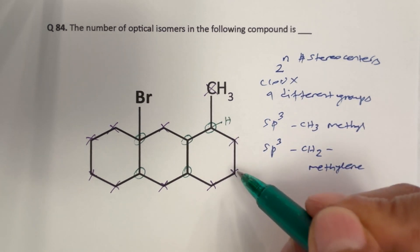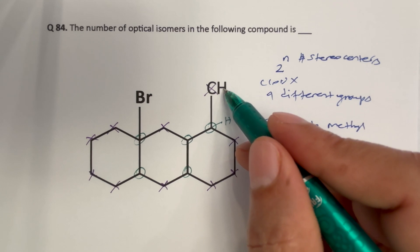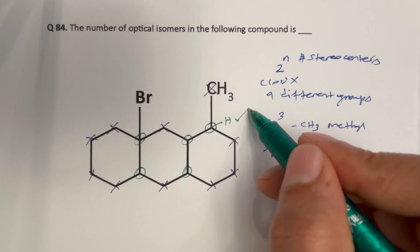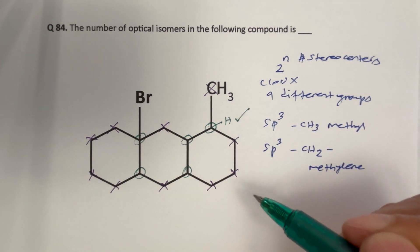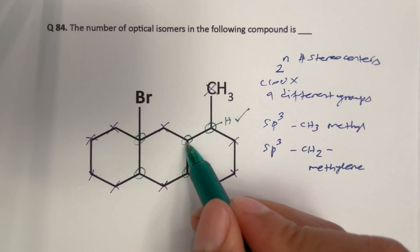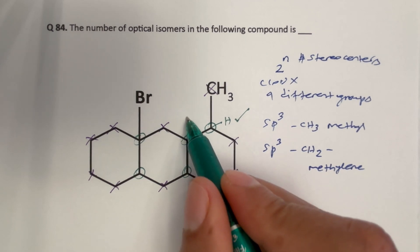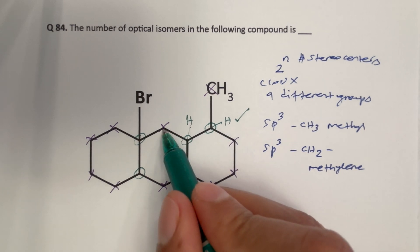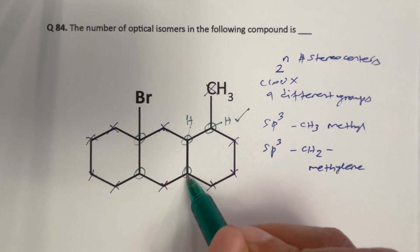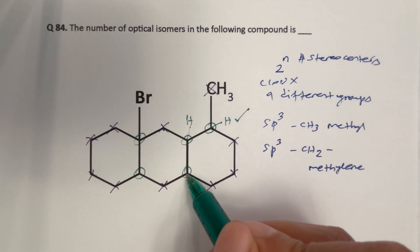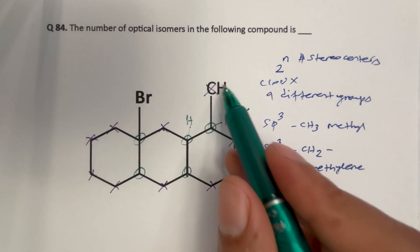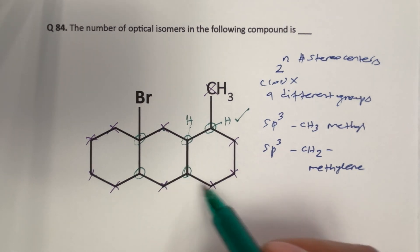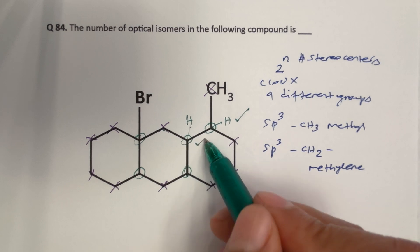For carbon one, we have a hidden hydrogen here, a methyl group, CH2 and CH2 and CH2 on one side, and CH on the other side. Therefore this is indeed attached to four different units and is chiral. For carbon two, we have a hidden hydrogen, CH on one side, CH2 here, and CH on the other side. But this CH is different from the other CH because this CH is connected to a methyl group, whereas the other is connected to methylenes. Therefore this is indeed chiral.